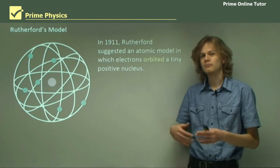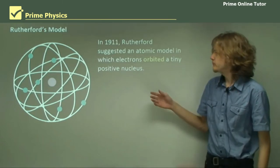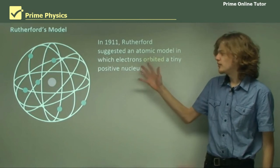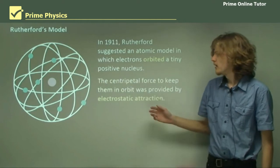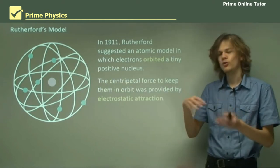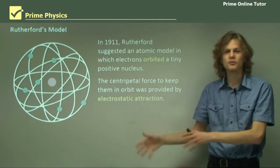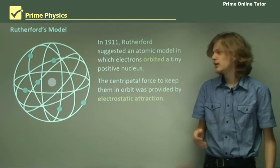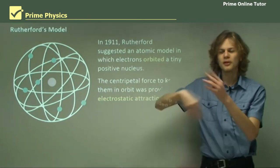In 1911, Rutherford published a model which explained his findings. He suggested that the electrons were orbiting a positive nucleus, which we can see over here. The centripetal force to keep them in orbit was provided by electrostatic attraction. Because, as we know, negative charged particles are attracted to positively charged particles. And so, in some aspects, it was a little bit like a solar system, with the sun in the middle and the planets going around.